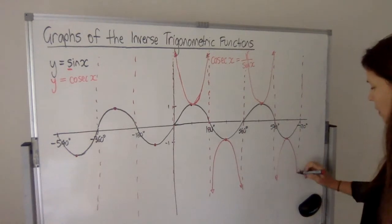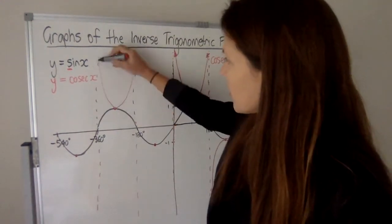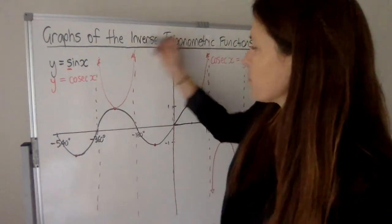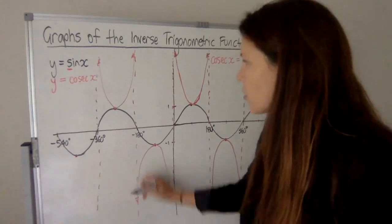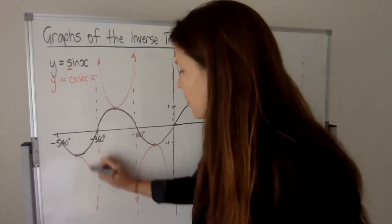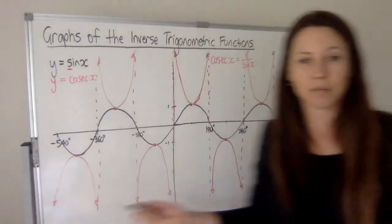So do you need to memorize this curve? Well, you should memorize the shape of what's going on here. That way, if you can very quickly and easily draw up sine x, you can also draw up cosec of x by just making all the humps go the other way.